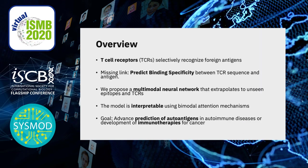To give you an overview, T cell receptors, or TCRs, selectively recognize foreign antigens, and this is one mechanism by which the immune system differentiates between foreign pathogens that are harmful and healthy human tissue. But so far there is a missing link, because we cannot yet predict the binding specificity between a T cell receptor and its antigen from the sequence.